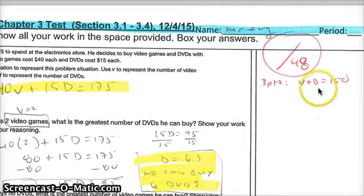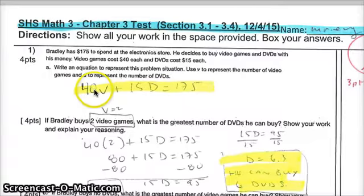If you wrote V plus D equals $150, I gave you 3 points out of 4. That's not correct because it tells you the price per item.